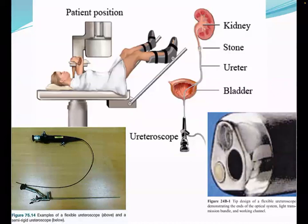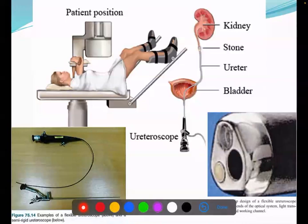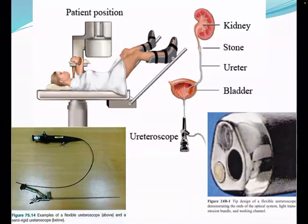After giving anesthesia, the patient is lying in the lithotomy position and we will pass the ureteroscope. The ureteroscope is very long. You can see in the lower left corner — this one is a flexible ureteroscope, which is flexible so that it can easily pass through the bendings of the ureter. The lower one is rigid — rigid means it is metallic and straight, it doesn't bend. So there are two types of ureteroscope; we can use both.